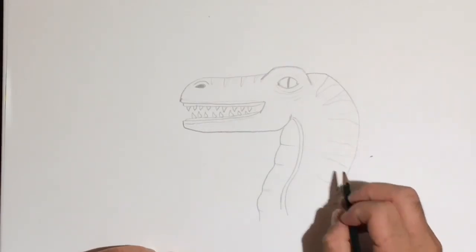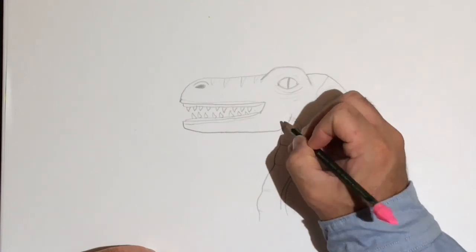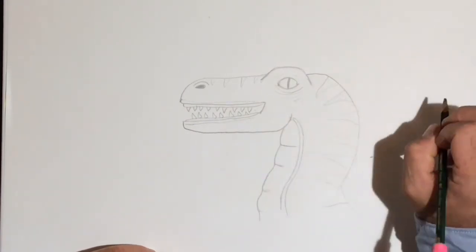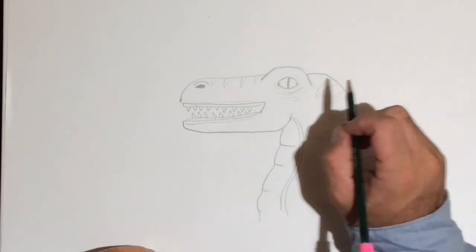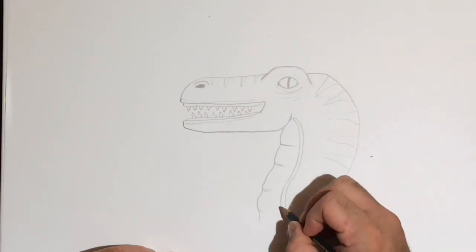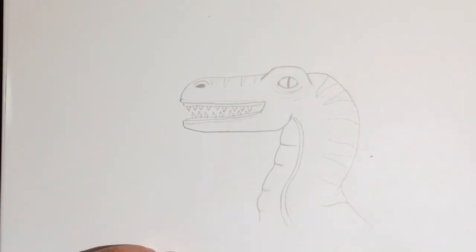Now you can take this a lot further. You could add texture with scales, you could shade it, you could color it, you could color and shade it. I encourage you to take it as far as you want. You could maybe even find some reference pictures and draw the rest of the dinosaur.